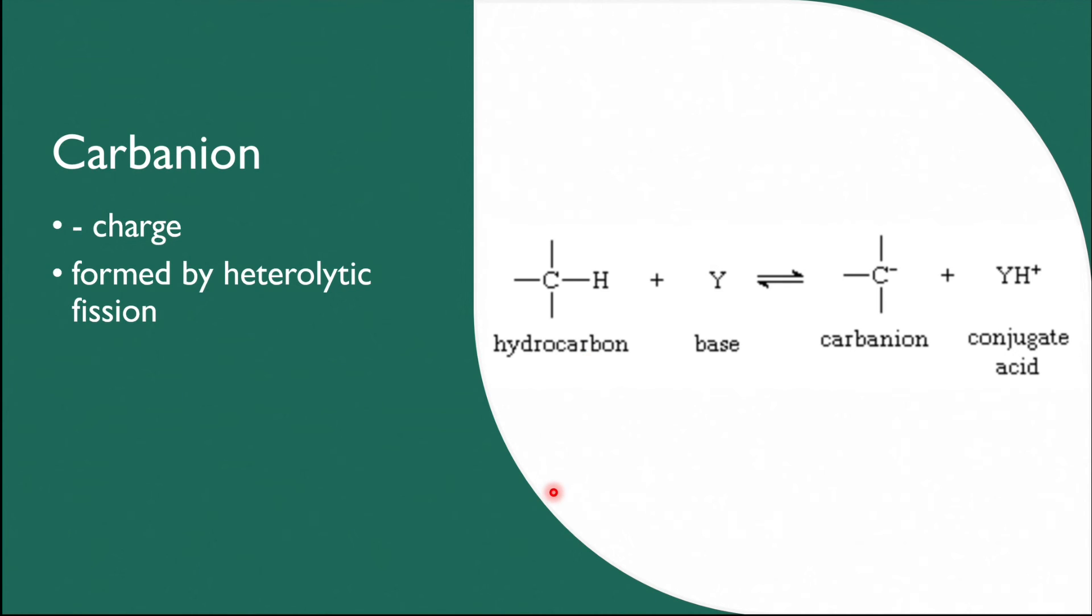A carbanion is a carbon ion which is formed by heterolytic bond breaking and carries a negative charge. In this example, the bonding pair of electrons is transferred to the carbon, making carbon negatively charged.